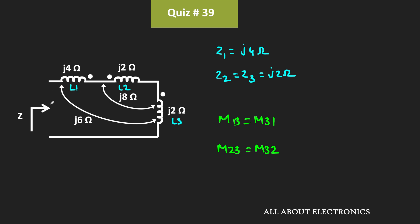Now, in coil number 1 the current is leaving the dot, while in coil number 3 it is entering the dot. That means the mutual inductance M13 and M31 will be subtractive. Similarly, in coil number 2 the current is entering the dot, and in coil number 3 the current is also entering the dot. That means the mutual inductance M23 and M32 will be additive.